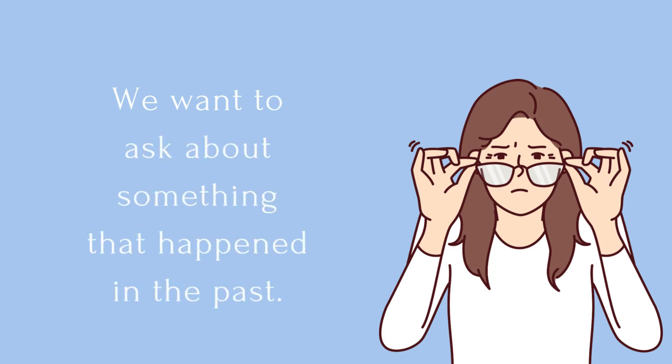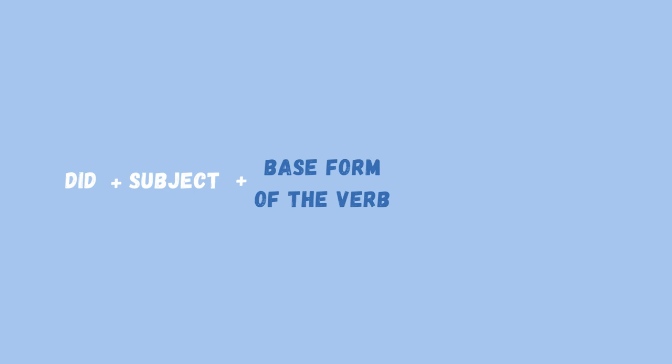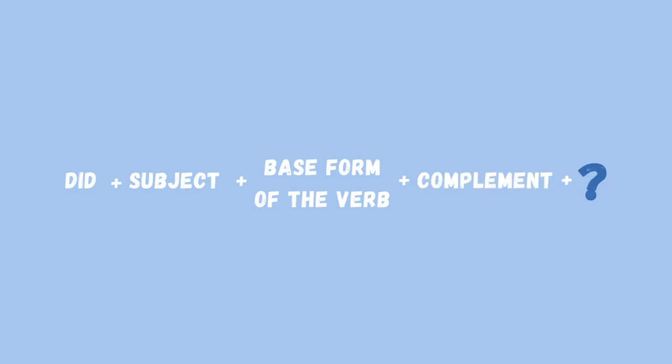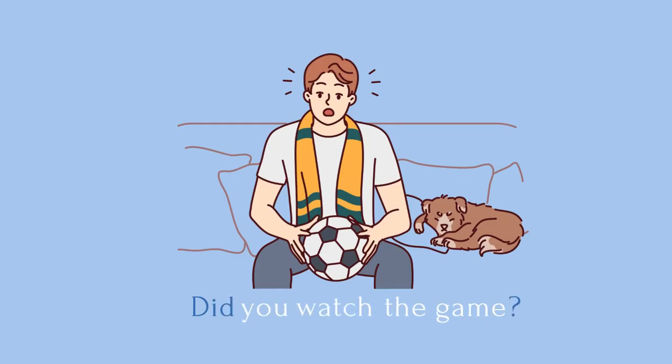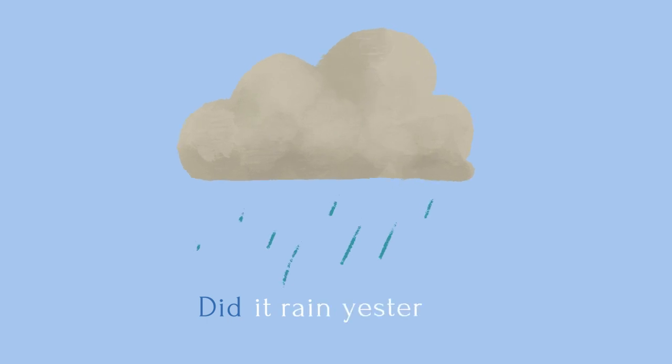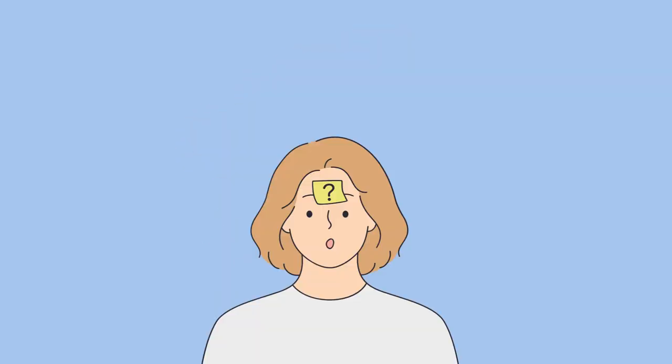For questions, we want to ask about something that happened in the past. The structure is: did + subject + the base form of the verb + complement — and never forget the question mark! Examples: 'Did you watch the game?' 'Did they study for the test?' 'Did it rain yesterday?'